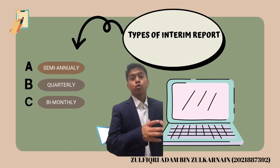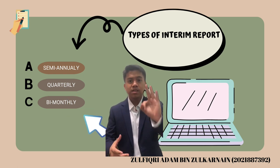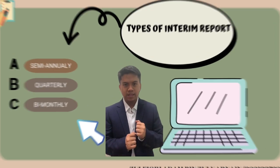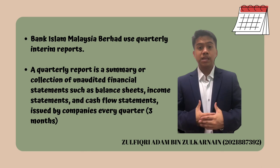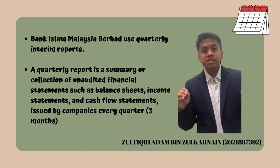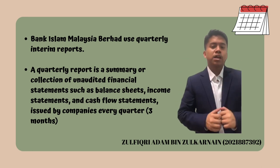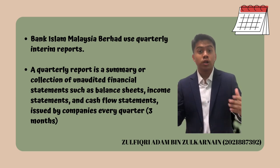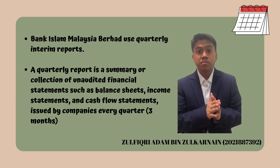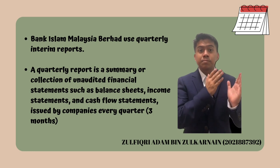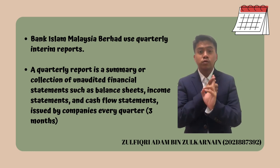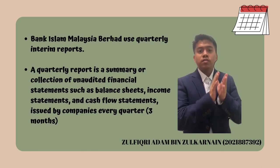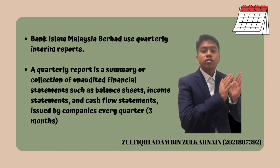There are three types of interim reports: semi-annually, quarterly, and bi-monthly. Bank Islam Malaysia Berhad utilizes the quarterly report, which is a summary or collection of unaudited financial statements — such as the balance sheet, income statement, and cash flow statement — issued by the company every quarter, that is, every three months.